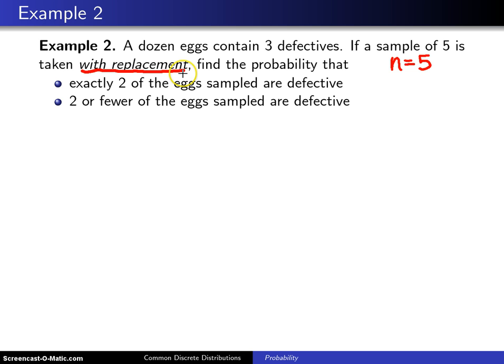When we sample with replacement, which is a very unusual way to sample eggs from a dozen because typically you don't replace the eggs, if you did not replace the eggs, then you would have a different distribution. You would have something that's known as the hypergeometric distribution.